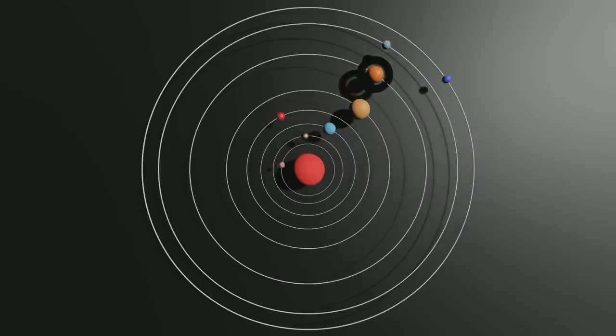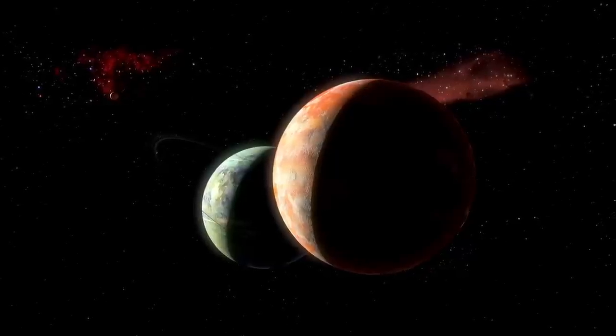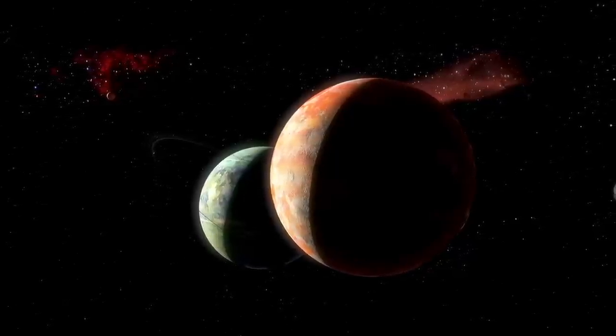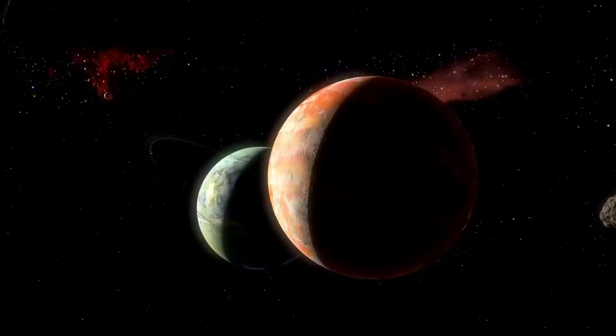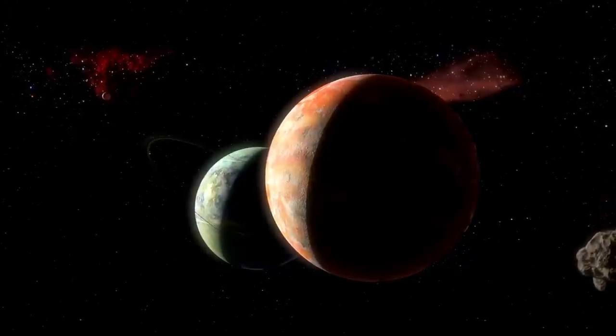Back in 2021, before JWST's full capabilities were operational, scientists posed an intriguing theoretical question. Could we one day detect artificial light on distant exoplanets, such as Proxima b?